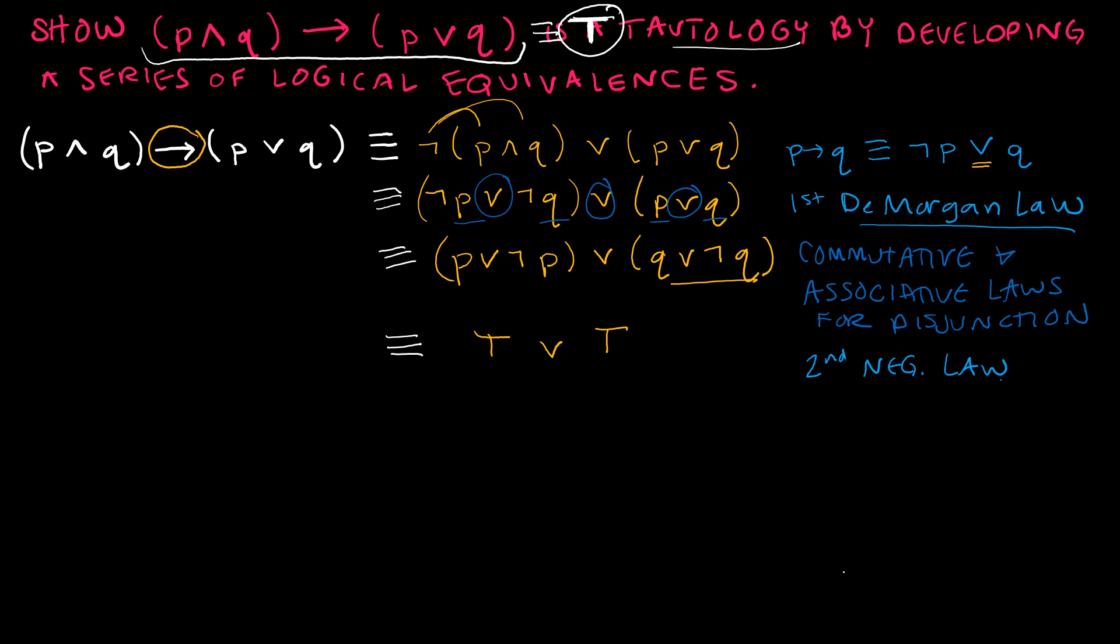So, now I have true or true by the second negation law, and if I have true or true, then I can say that that is in fact congruent to true. What rule can I say is saying that it is congruent to true, and that is the domination law. Because if you'll recall, the domination law says P or true is congruent or equivalent to P, and of course, if this is true or true, it's congruent or equivalent to true. So, that is how I would prove that, again, by developing a series of logical equivalences.